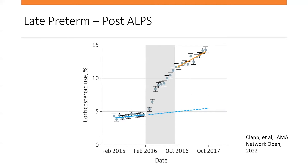ALPS is this fascinating phenomenon where a single RCT immediately changed practice patterns. Looking at corticosteroid use — this gray area represents when ALPS was published online in February 2016 and in person in April 2016. Pre-ALPS, only about 3 to 5% of patients were getting late preterm steroids. By October 2016 — less than six months later — we were up to 12%, doubling the number of people receiving antenatal corticosteroids. This really changed practice patterns almost overnight.